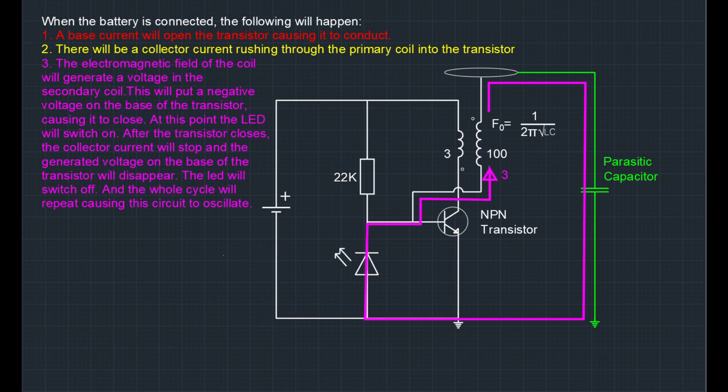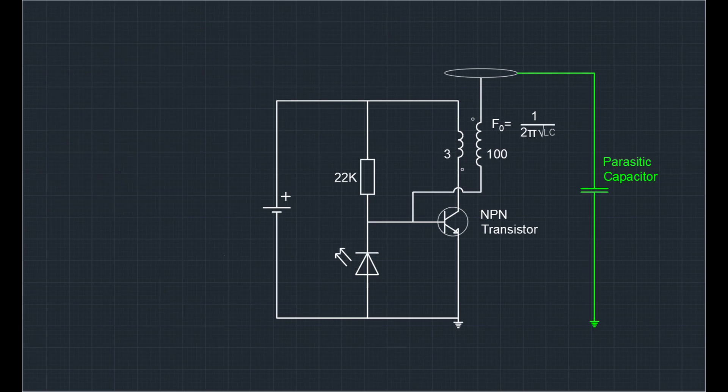Without the presence of a collector current, the electromagnetic field in the coil will collapse and the voltage that was generated in the secondary part of the coil will go back to zero. This means we go back to the state we started in and the circle is complete. The circuit, because of this, will start to oscillate.